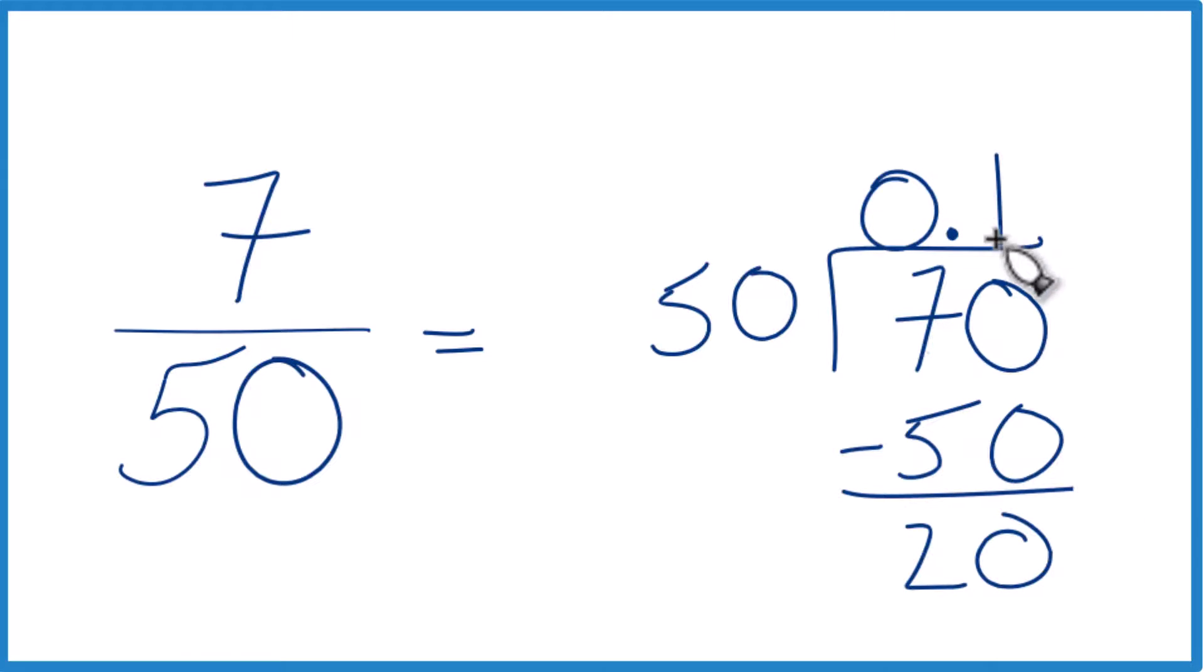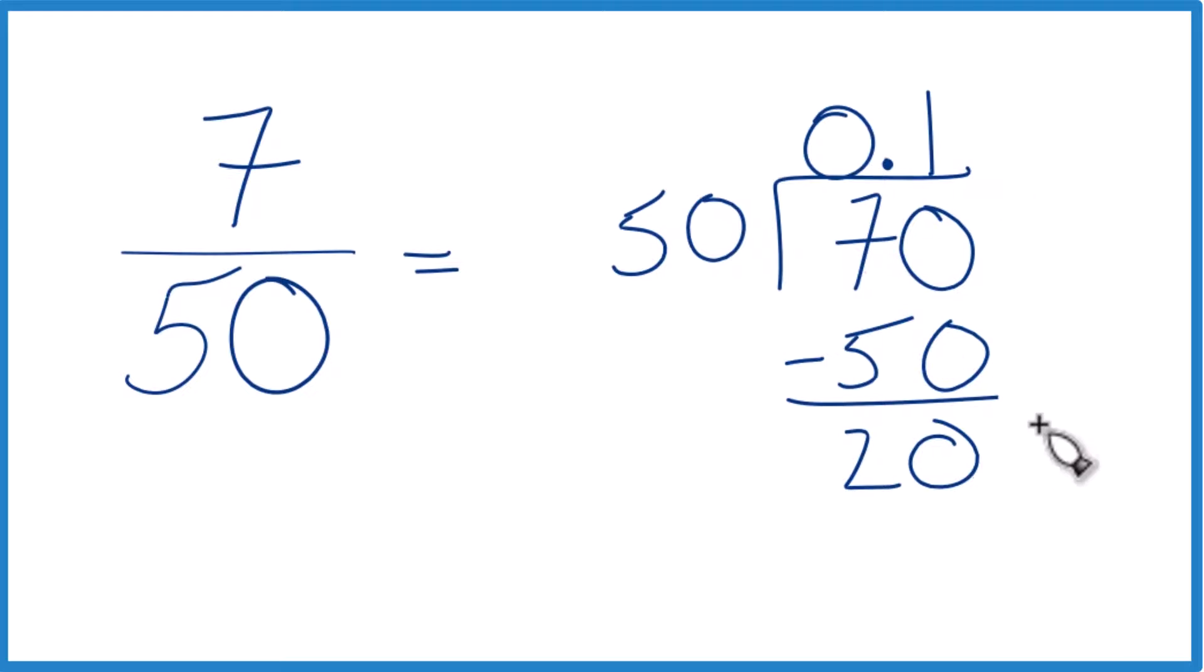50 doesn't go into 20, so we're going to move over a decimal place and call this 200. Now 4 times 50, that's 200.